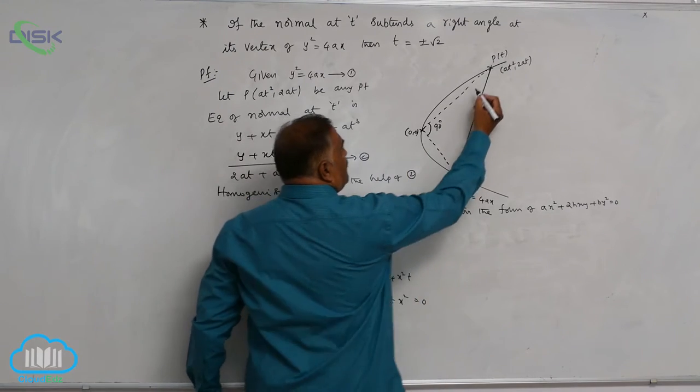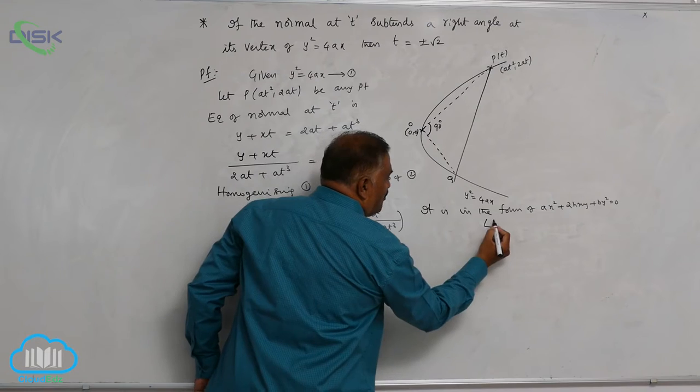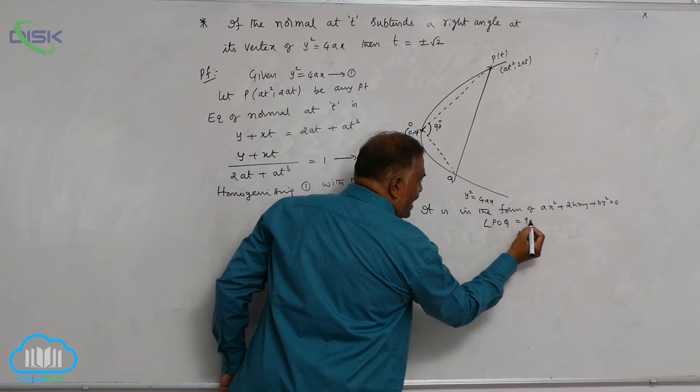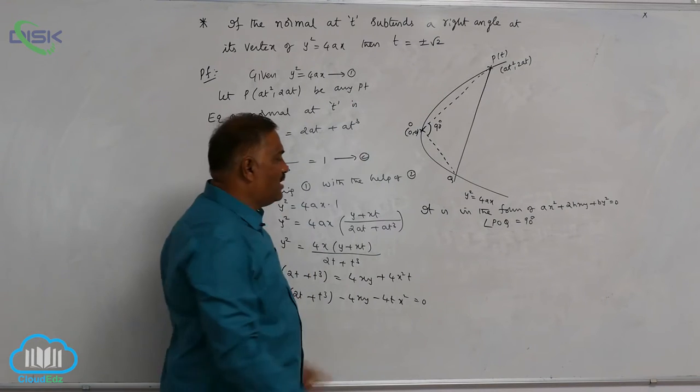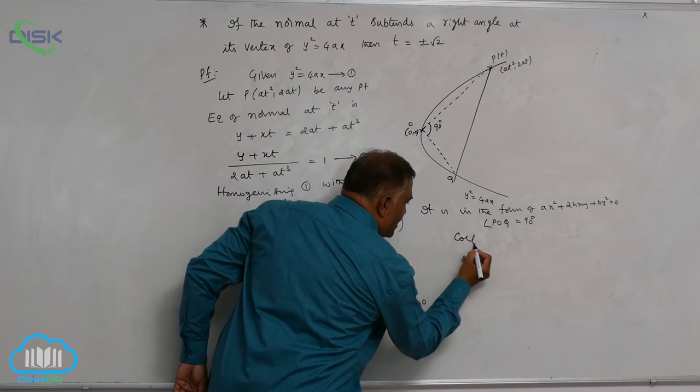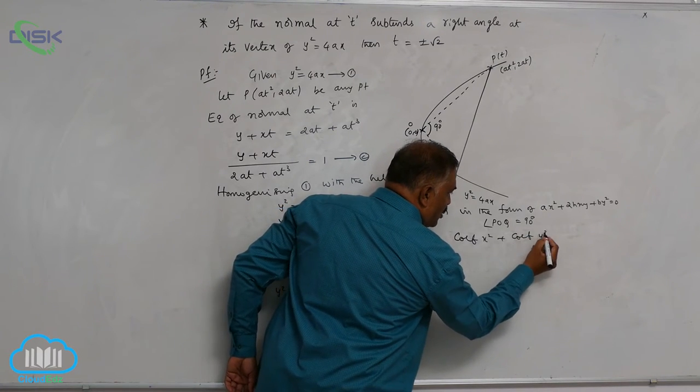So, if you take p and q and this is o, angle p o q is equal to 90 degrees. He says, it subtends a right angle. Then, coefficient of x square plus coefficient of y square is equal to 0.